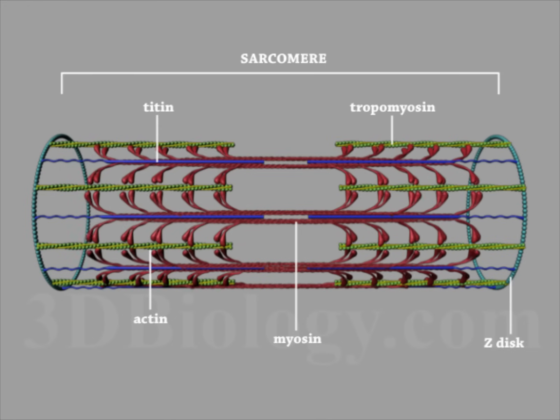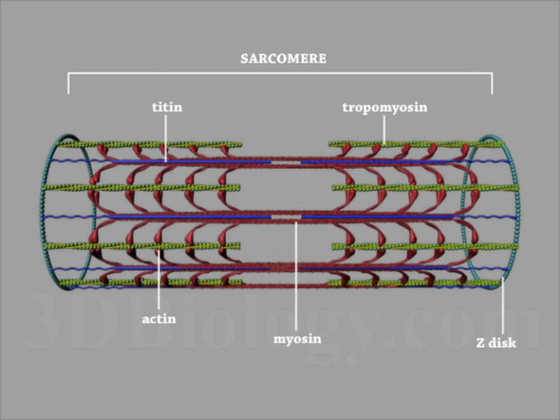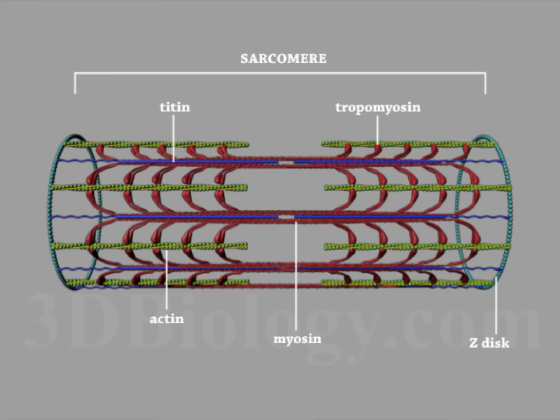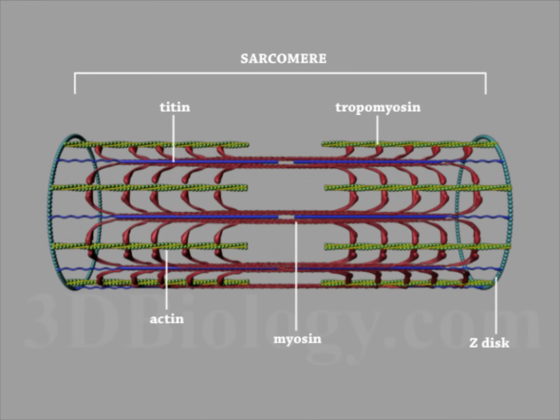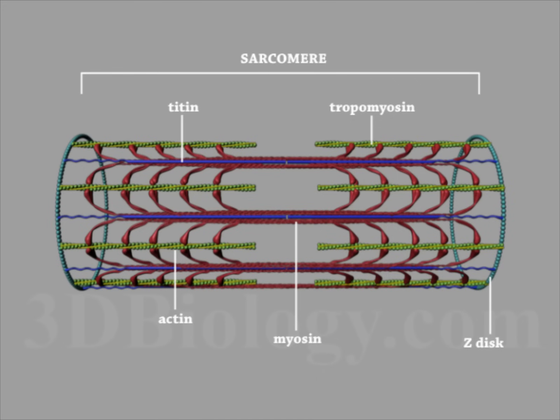In muscle contraction, actin filaments slide past myosin filaments. Neither filament changes in length, yet the sarcomere becomes shorter.